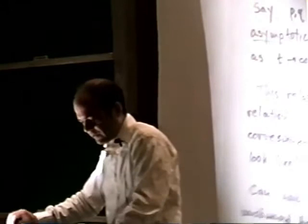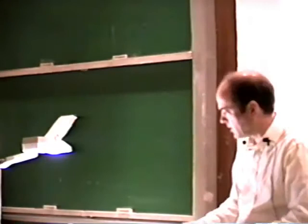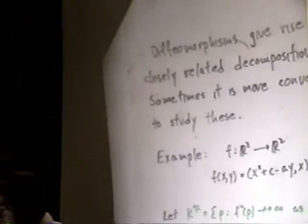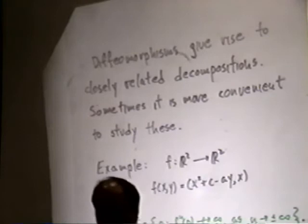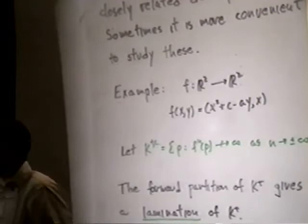A lot of times flows arise naturally, as in this example. But there's a closely related mathematical model where you deal with diffeomorphisms rather than flows. This is just a case of replacing the group R — an R action by a Z action — which is a question of going from global fields to function fields. So we'll go from an R action to a Z action.